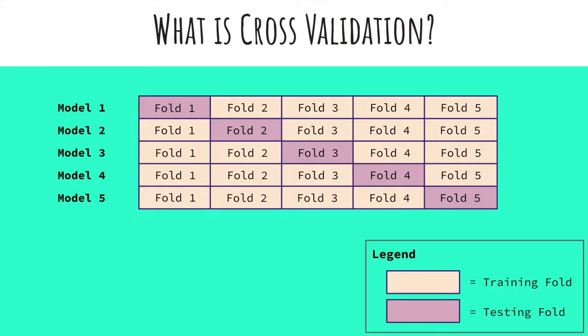What we do is create K models, where K is the number of folds. So if I created 5 folds, as I have here, I will create 5 different models. In each model, I will test on a different fold, using the remaining folds as training data. For example, if we look at model 1, you can see I will train my model on folds 2, 3, 4, and 5, and test my model on fold 1.